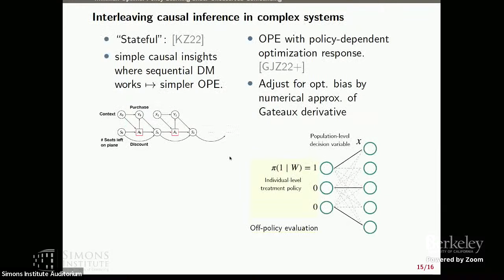That covers robust causal inference. I'll briefly discuss work on the interplay between causal inference and decision-making in complex systems. One work focuses on a restricted subclass of MDPs where sequential decision-making has succeeded in practice, reading off causal structure from the literature to achieve radically simpler statistical estimation. A newer work considers settings where utility is the output of a downstream optimization problem — for example, personalized job training where domain experts care about system-level or general equilibrium responses — with the technical focus on removing bias introduced by optimization.